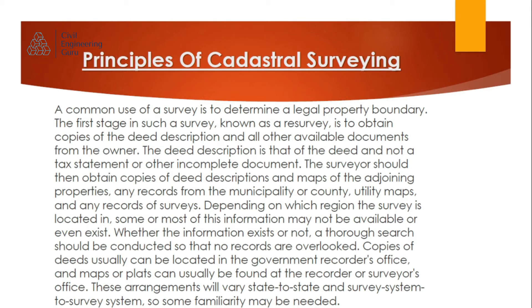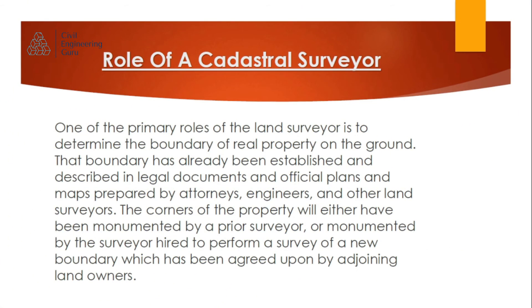Whether the information exists or not, a thorough search should be conducted so that no records are overlooked. Copies of deeds can usually be located in the government recorder's office, and maps or plats can usually be found at the recorder or surveyor's office. These arrangements will vary state to state and survey system to survey system, so some familiarity may be needed.